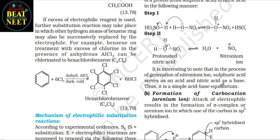If excess electrophilic reagent is used, further substitution reactions may take place in which other hydrogen atoms of the benzene ring may also be successively replaced by the electrophile. For example, benzene on treatment with excess chlorine in the presence of anhydrous AlCl₃ can be chlorinated to hexachlorobenzene (C₆Cl₆).